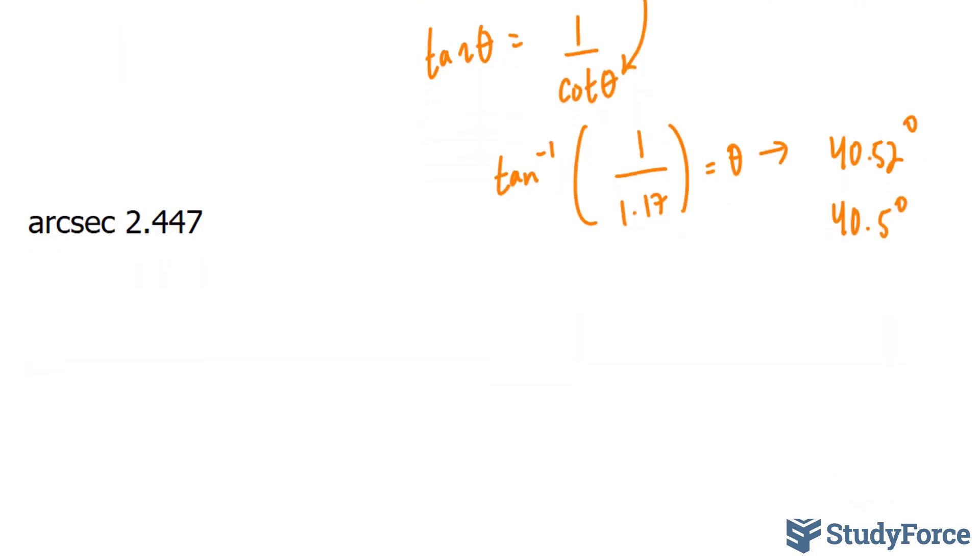And in our last example in this video, we have arc secant. This is the first time we use secant. Arc secant means secant inverse. But of course, that's useless to us because our calculator doesn't have anything about secant. So we're going to set this equal to theta. We're going to revert it back to its original form.